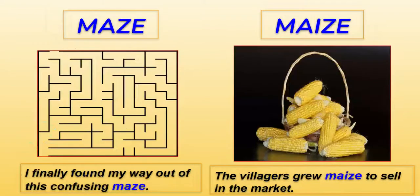Now 'maze' and 'maize' — the spellings are so similar except for the 'i.' M-A-Z-E is a maze — a puzzle: 'I finally found my way out of this confusing maze.' Children love to play maze games and puzzles. M-A-I-Z-E is maize — corn: 'The villagers grew maize to sell in the market.' Corn comes from maize.